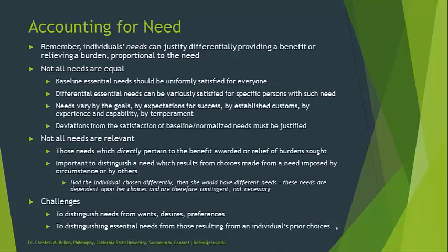Challenges in accounting for desert in terms of need include the difficulty of distinguishing needs from wants, desires, and preferences. A need is something that an individual in a significant way can't control the existence of, whereas wants, desires, and preferences are presumably under the individual's control. It's also challenging to distinguish essential needs from those resulting from an individual's prior choices — for example, an individual's need for a liver transplant may be the result of choices made as a young adult consuming excessive amounts of alcohol, contributing to cirrhosis of the liver. How far back do we go to find choices that result in their current condition?